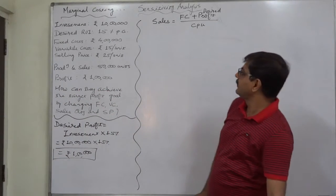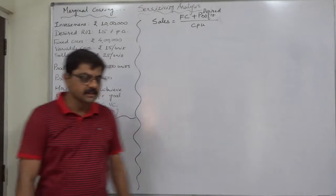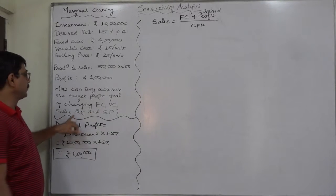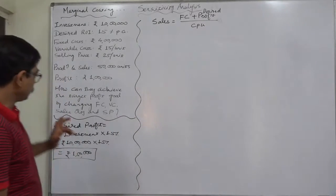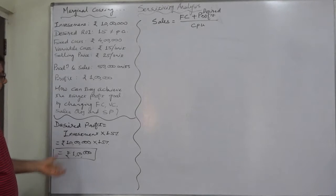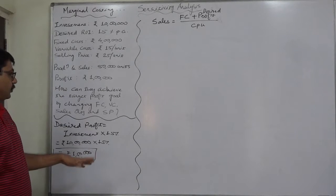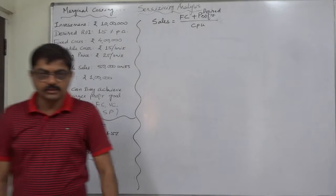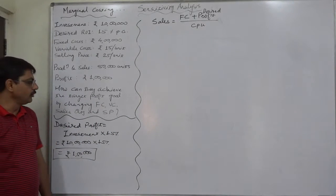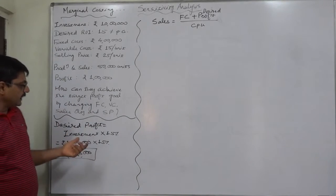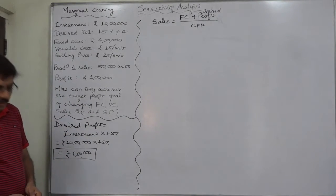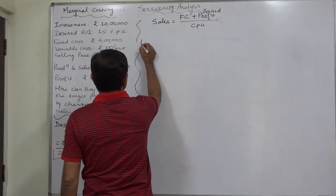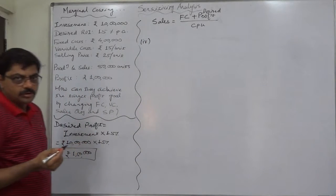Hello and welcome again. This is the last point in the existing case of sensitivity analysis. As we have already discussed, if the management wants to change fixed cost, variable cost, or sales quantity — but now if the management comes to know that it is not possible to decrease the fixed cost or variable cost, or even increase the sales quantity after their feasibility analysis, they have only one alternative: to change the contribution per unit by increasing the selling price.